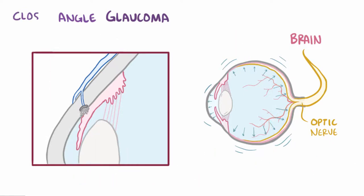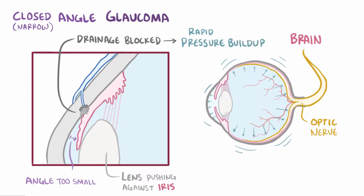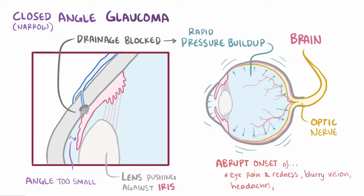Another type of glaucoma is closed angle glaucoma, also known as angle closure glaucoma or narrow angle glaucoma, and this is due to the angle between the iris and the cornea being too small, meaning that the passageway for aqueous humor outflow is too narrow, as a result of the lens being pushed against the iris. This causes a rapid buildup of pressure within the eye, which can cause abrupt onset of severe eye pain, eye redness, blurry vision, headaches, and nausea.